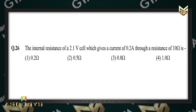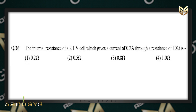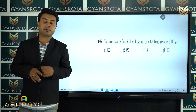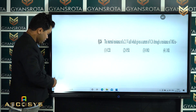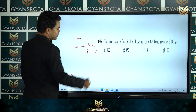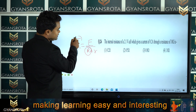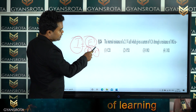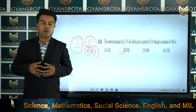Question 26: the internal resistance of a 2.1 volt cell which gives a current of 0.2 ampere through a resistance of 10 ohm. Using the formula I = EMF / (R + r), where EMF = 2.1 V, I = 0.2 A, and R = 10 ohm, substituting the values gives the internal resistance r = 0.5 ohm.